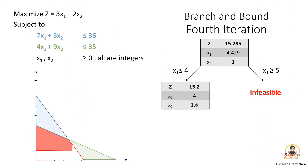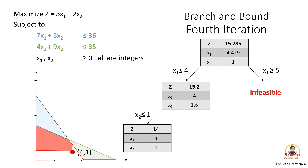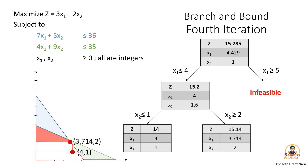For the fourth iteration, branch the problem by selecting an integer value for x2. On the left, we have x2 less than or equal to 1. The new values of the variables are x1 equals 4 and x2 equals 1. And on the right, we have x2 greater than or equal to 2. The new values of the variables are x1 equals 3.714 and x2 equals 2. Again, at x1 equals 3.714 on the right, it's not an integer. Thus, let's continue to the fifth iteration.